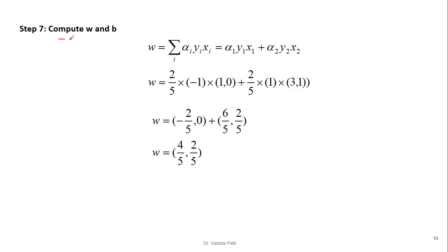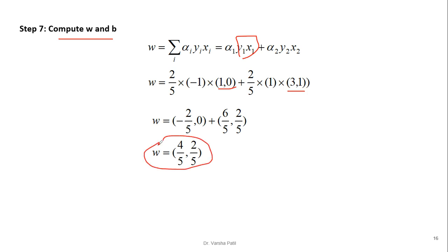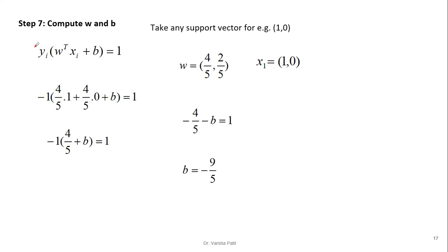The next step is to compute w and b. From the partial derivative with respect to w, we have w = Σ alpha_i * y_i * x_i. With two support vectors, we substitute: alpha_1 = 2/5, y_1 = -1, x_1 = (1, 0) and alpha_2 = 2/5, y_2 = +1, x_2 = (3, 1). This gives w = (-2/5, 0) + (6/5, 2/5) = (4/5, 2/5).